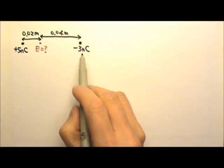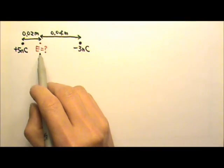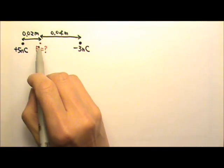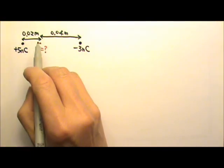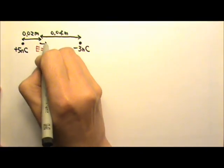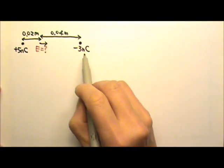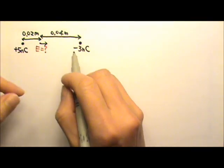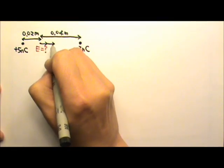There are two point charges producing electric field over here. The field produced by the positive charge goes out of the positive charge, so it goes to the right. The field produced by the negative charge goes into the negative charge, so the field also goes to the right.